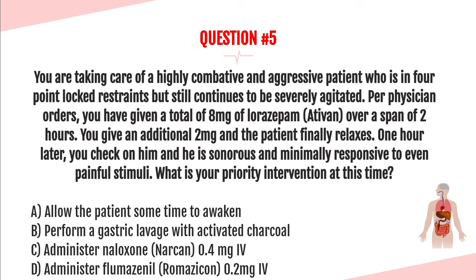What is your priority intervention? Is it A, allow the patient time to awaken; B, perform a gastric lavage with activated charcoal; C, administer naloxone (Narcan) 0.4 mg IV; or D, administer flumazenil (Romazicon) 0.2 mg IV? The answer is D — administer flumazenil or Romazicon 0.2 mg IV.